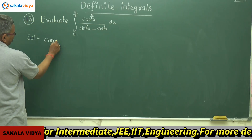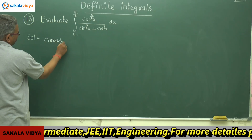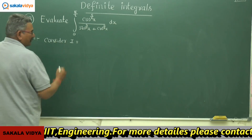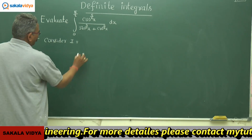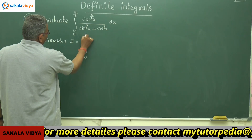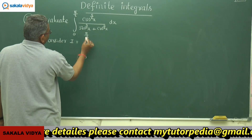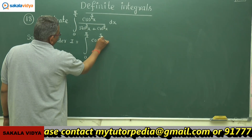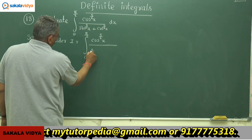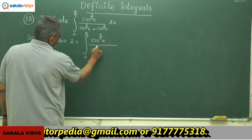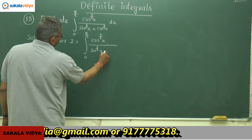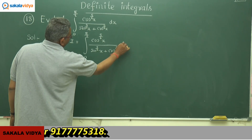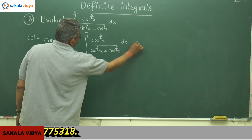Consider I equals the integral from 0 to π/2 of cos^(5/2)(x) divided by [sin^(5/2)(x) + cos^(5/2)(x)] dx. Call this equation 1.